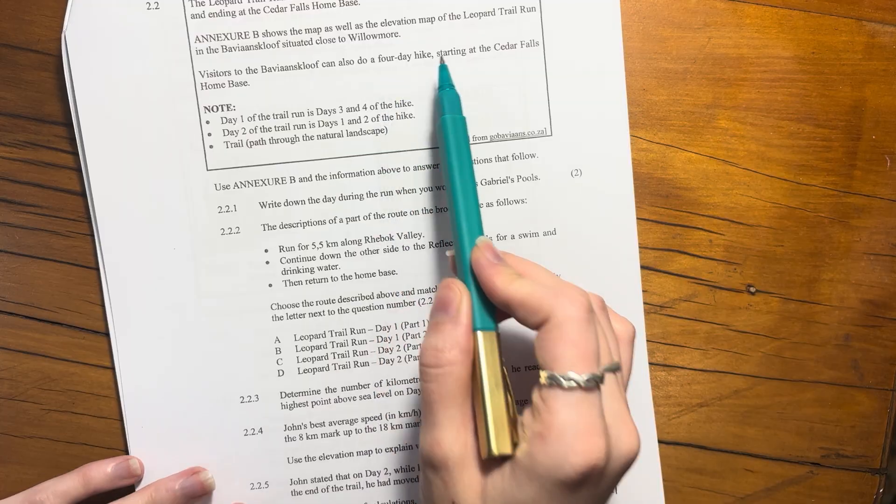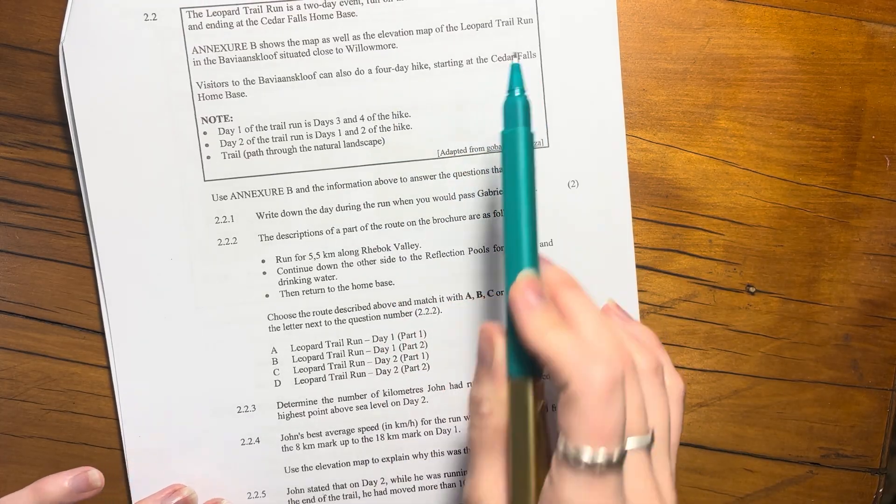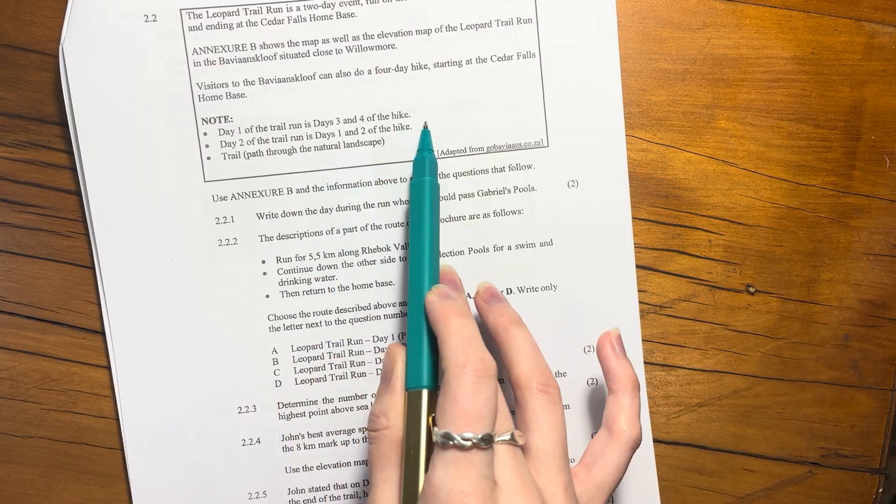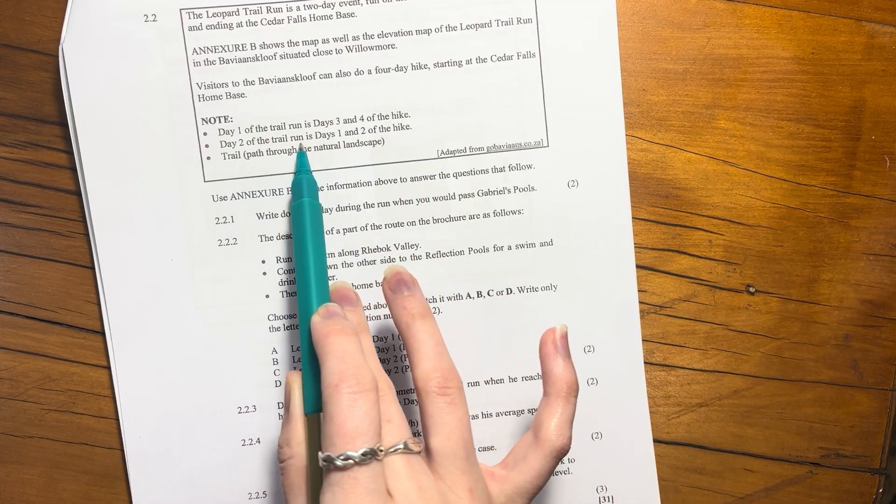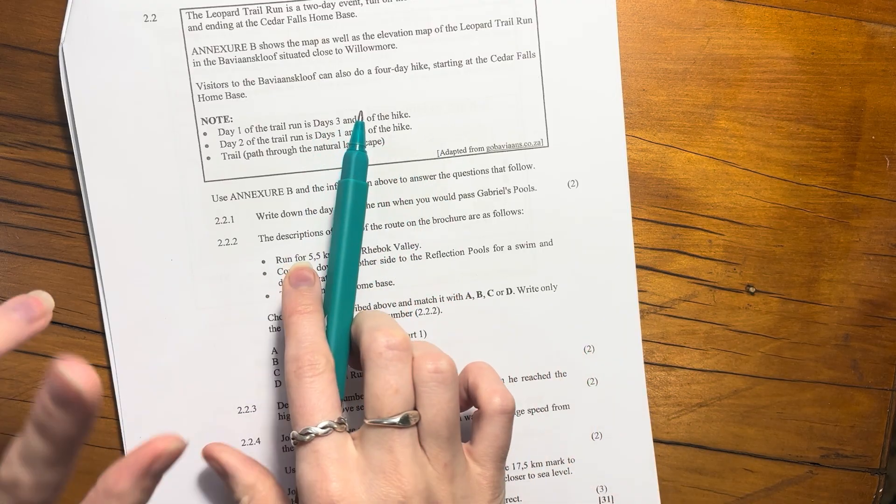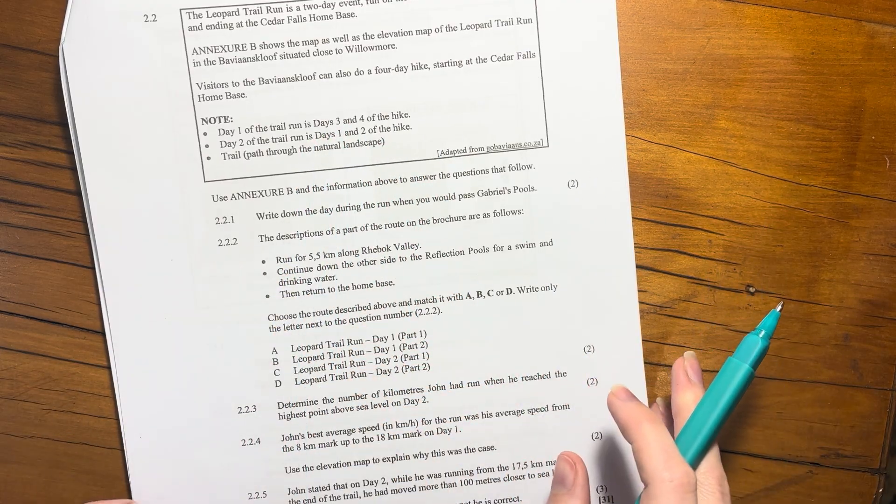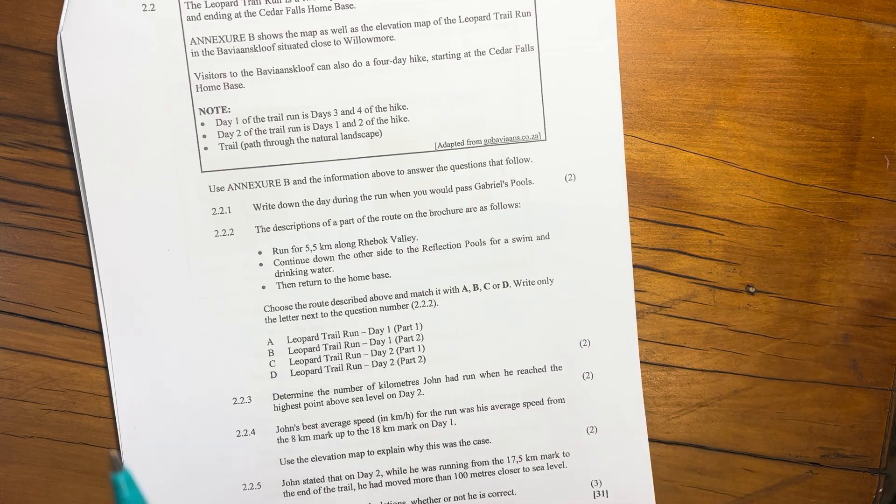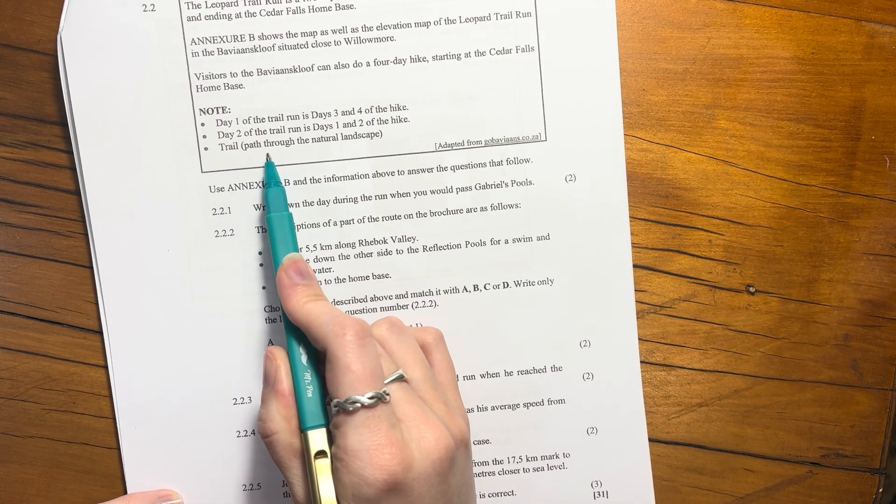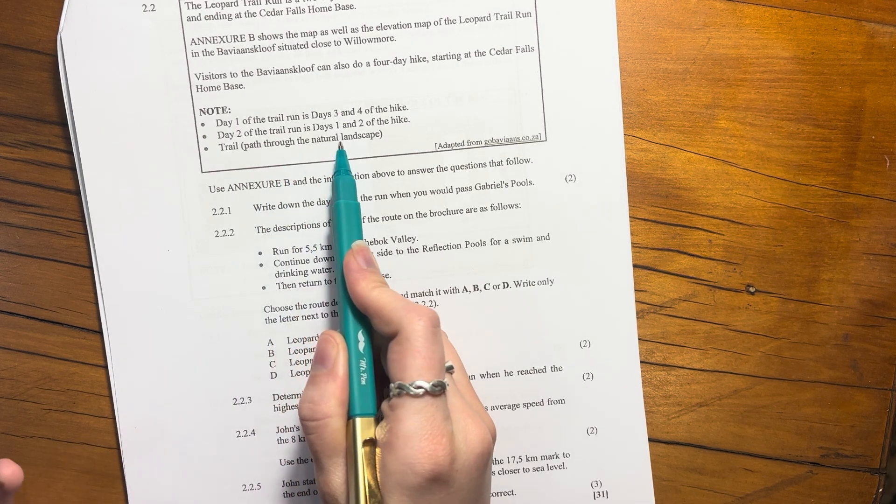Day one of the trail run is day three and four of the hike. Day two of the trail run is day one and two. Basically, if you're running it takes two days; if you're hiking it takes four days, which makes sense because hiking you're walking. Trail just means a path through natural landscape, so generally it's not too smooth.